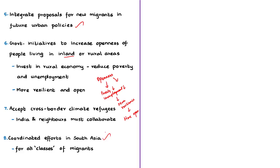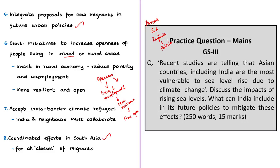To summarize this editorial, we have seen the threats posed by climate change and sea level rise to people living in coastal areas, the impacts of sea level rise, and what India must do to alleviate those impacts in the future. Now have a look at the practice question.